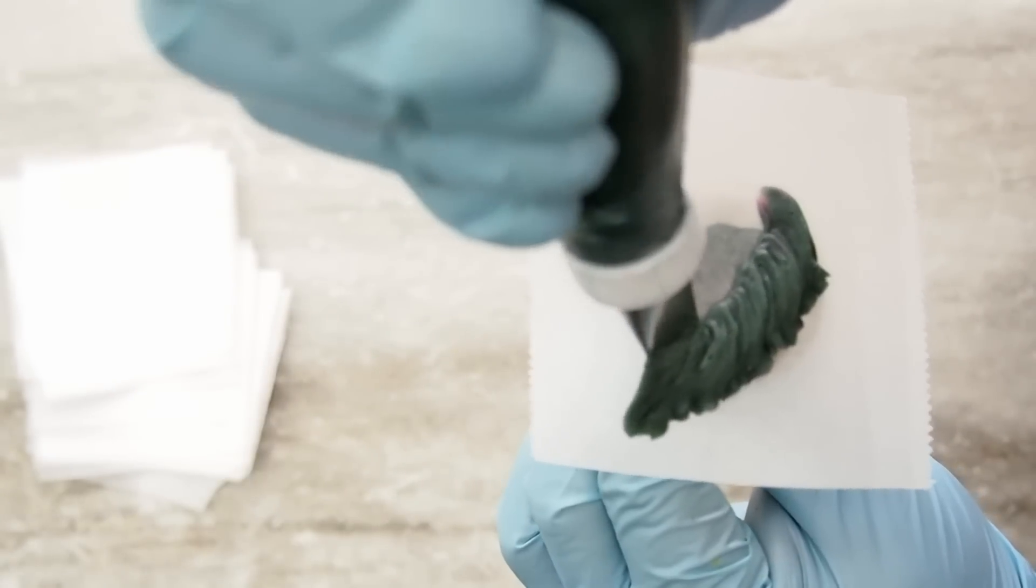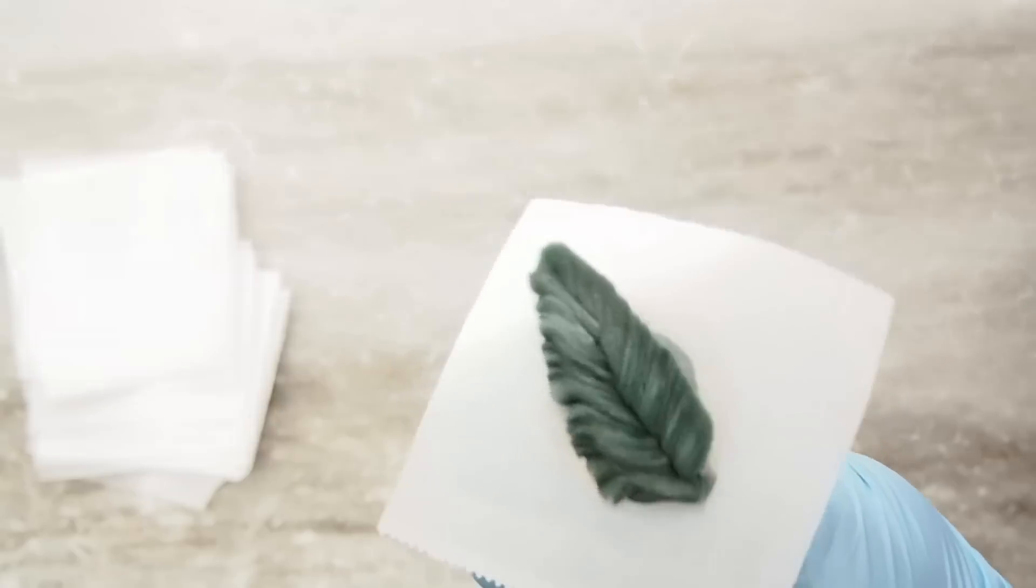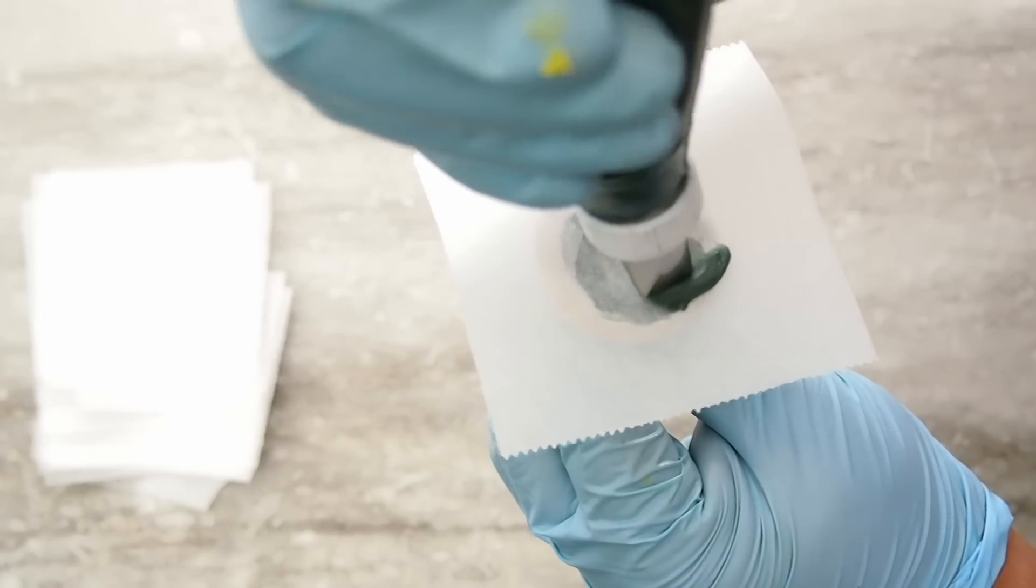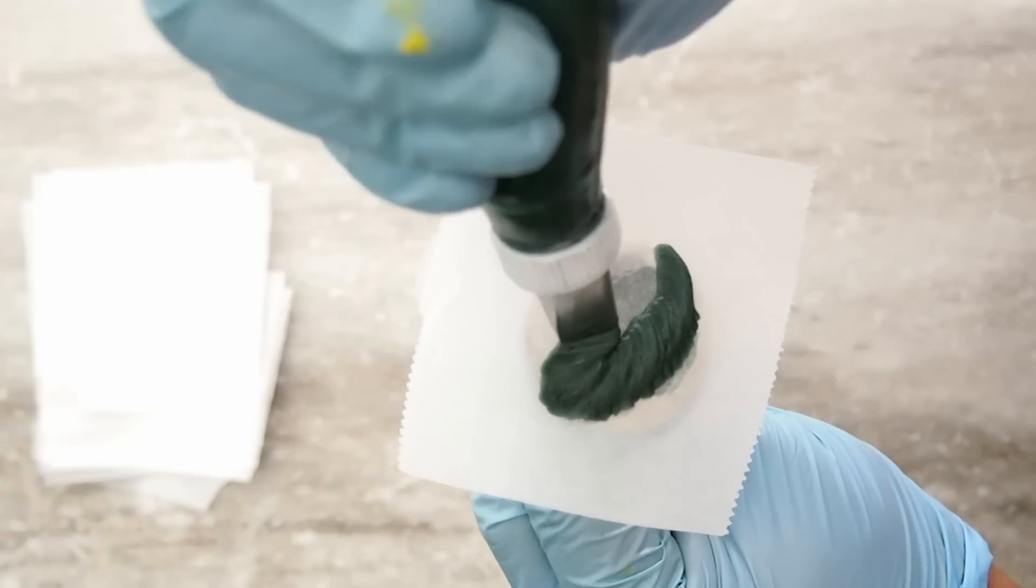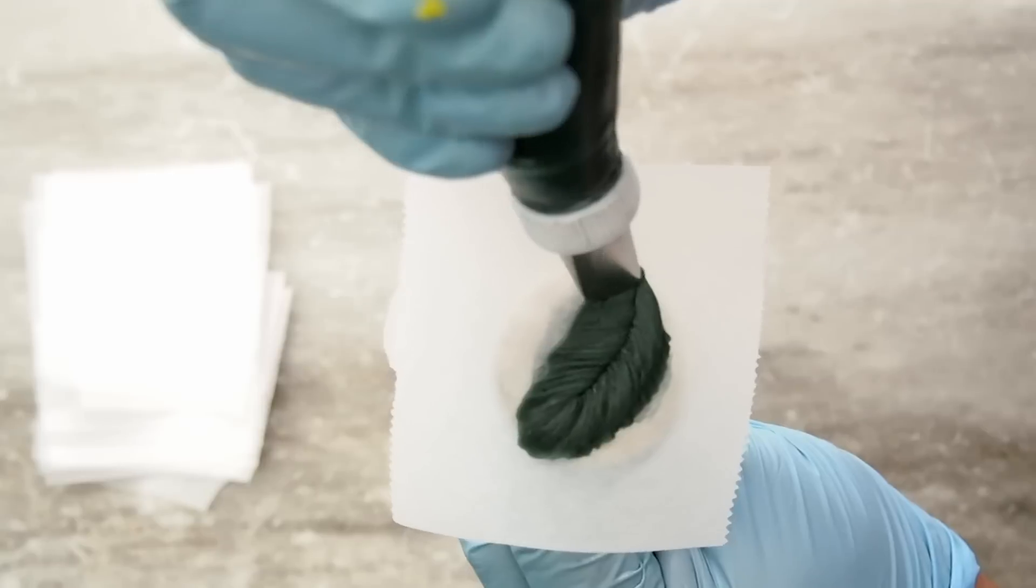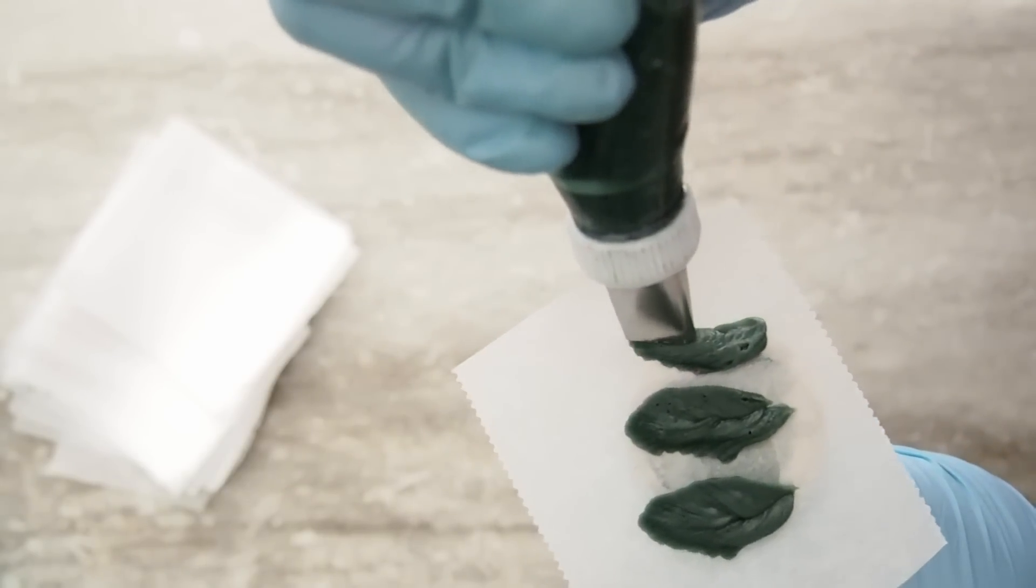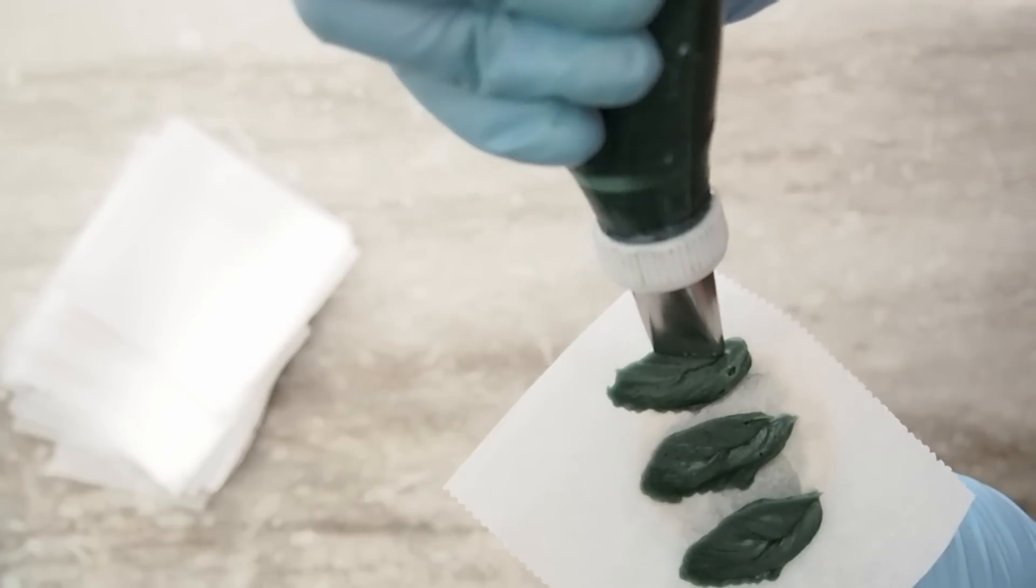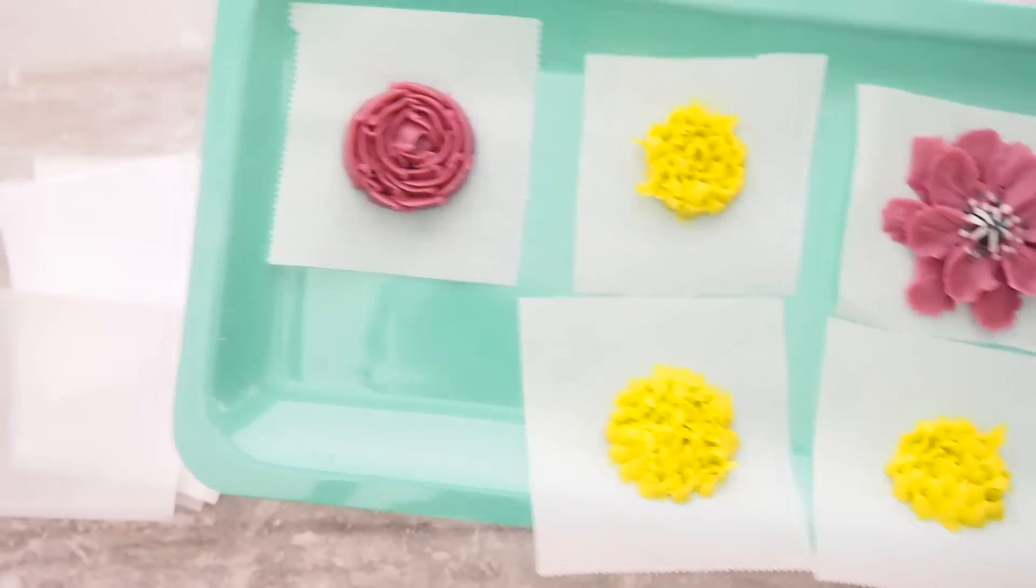And right here we have a number 104 tip in gray and we're creating some leaves in gray. I know it sounds weird, but we're creating a monochromatic color that will go with our brush strokes that we did. So, I don't want to put any green leaves. Be sure to always make extra flowers just in case and put these in the freezer to chill.